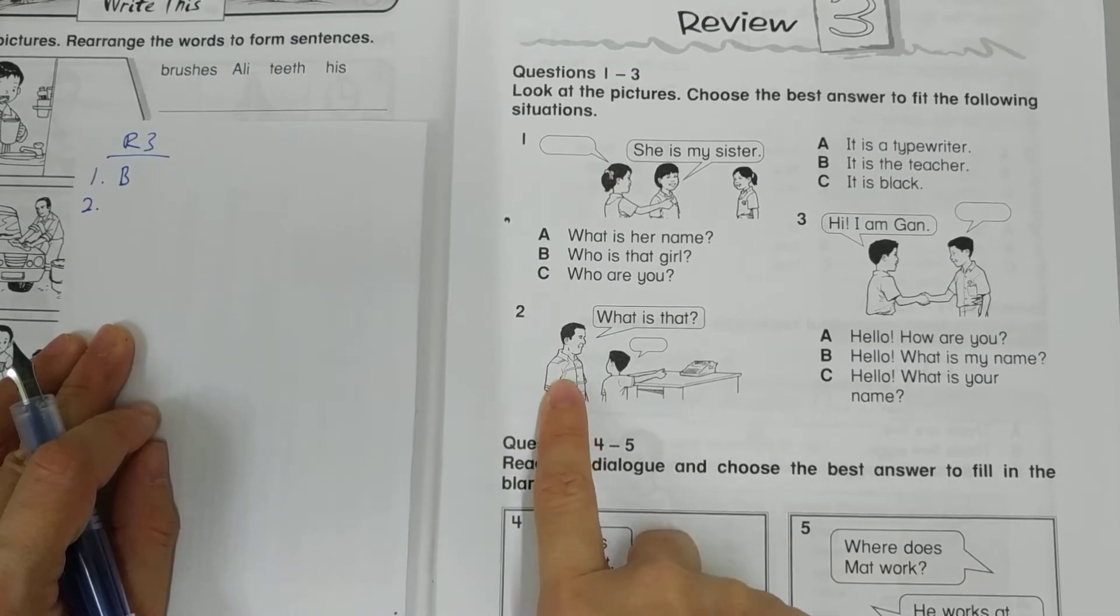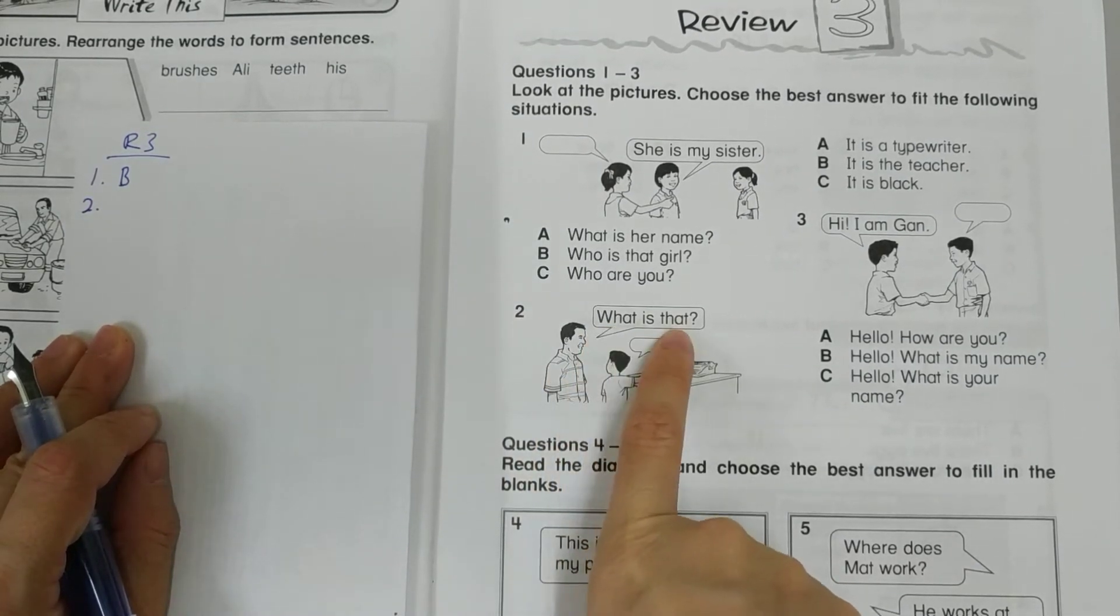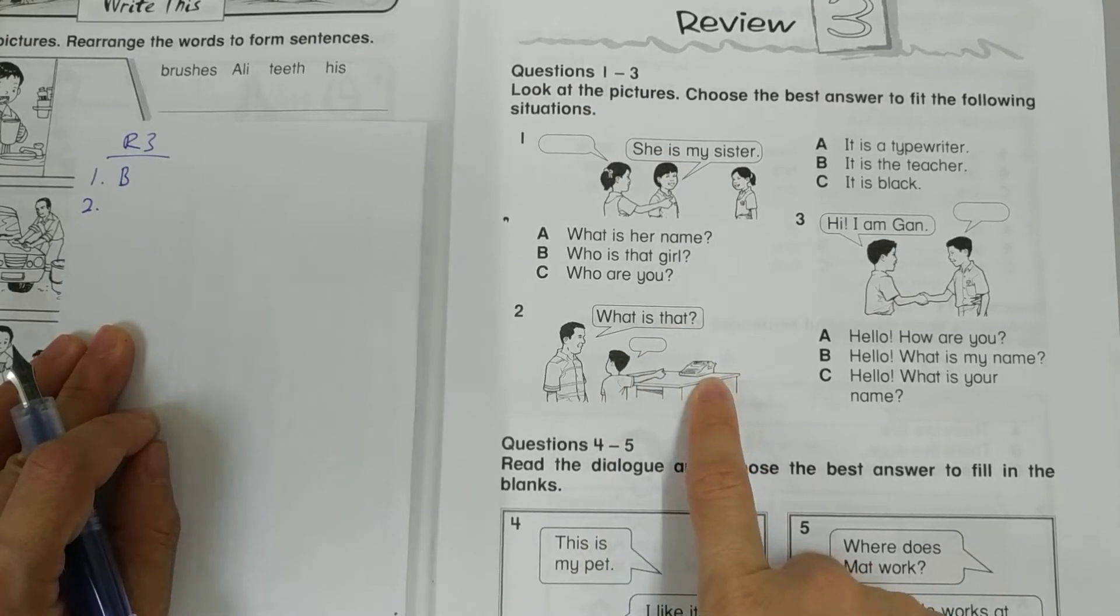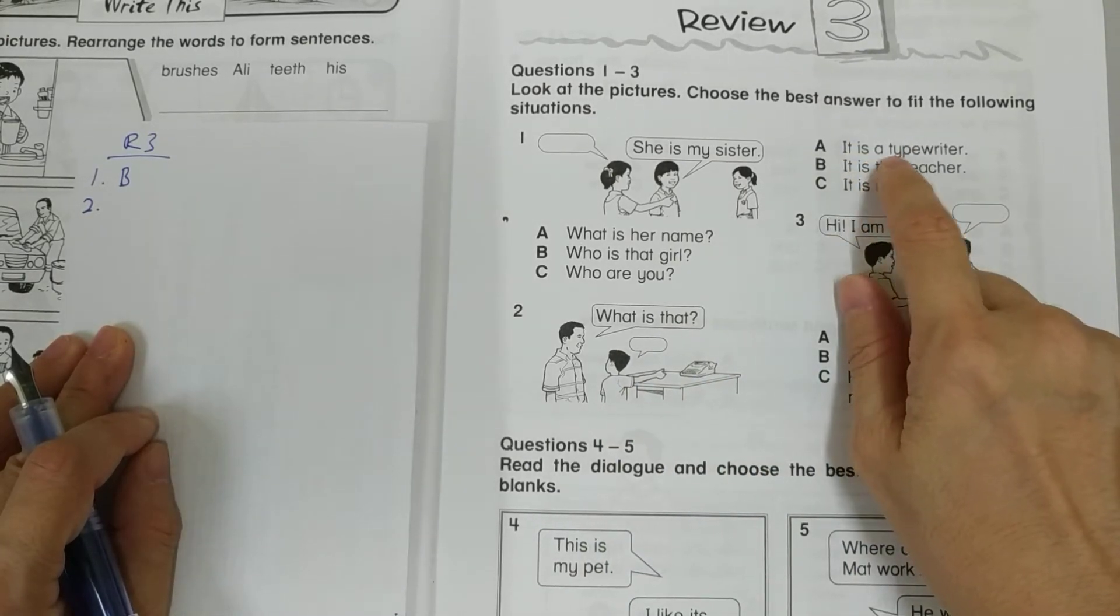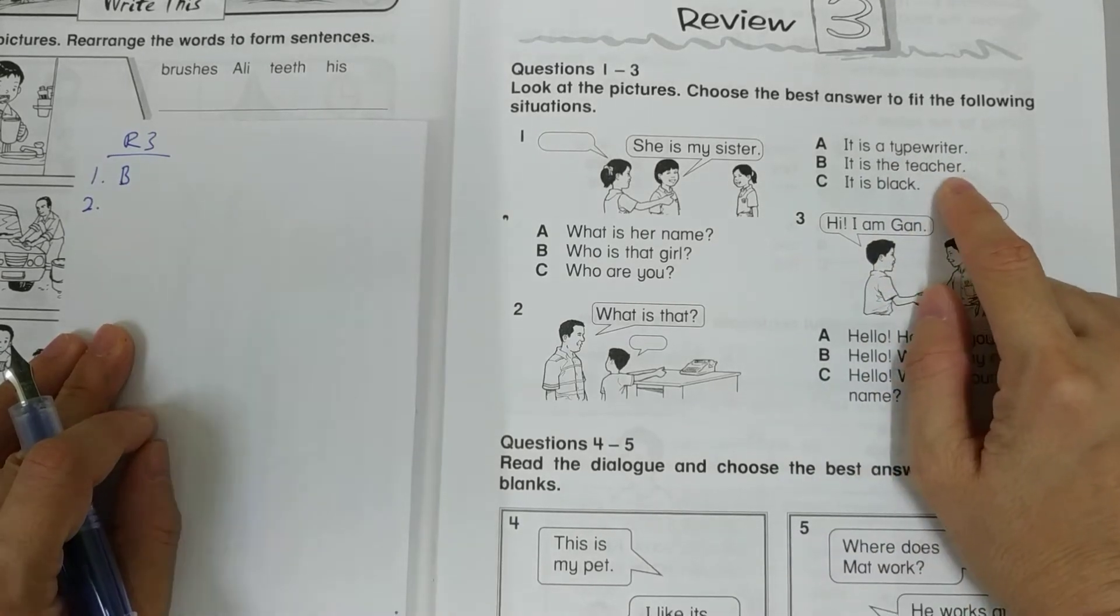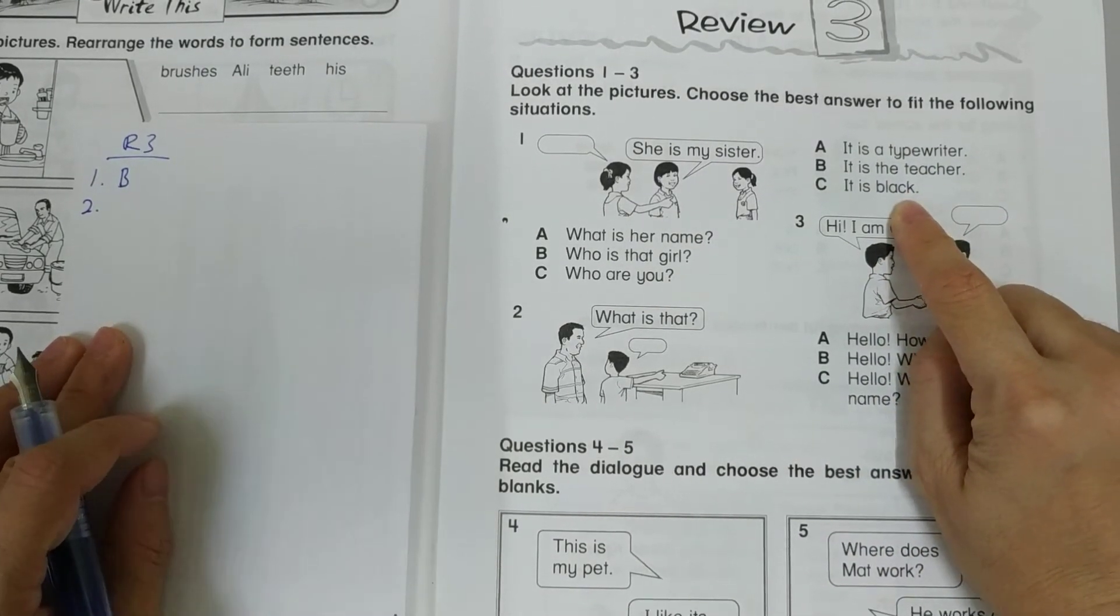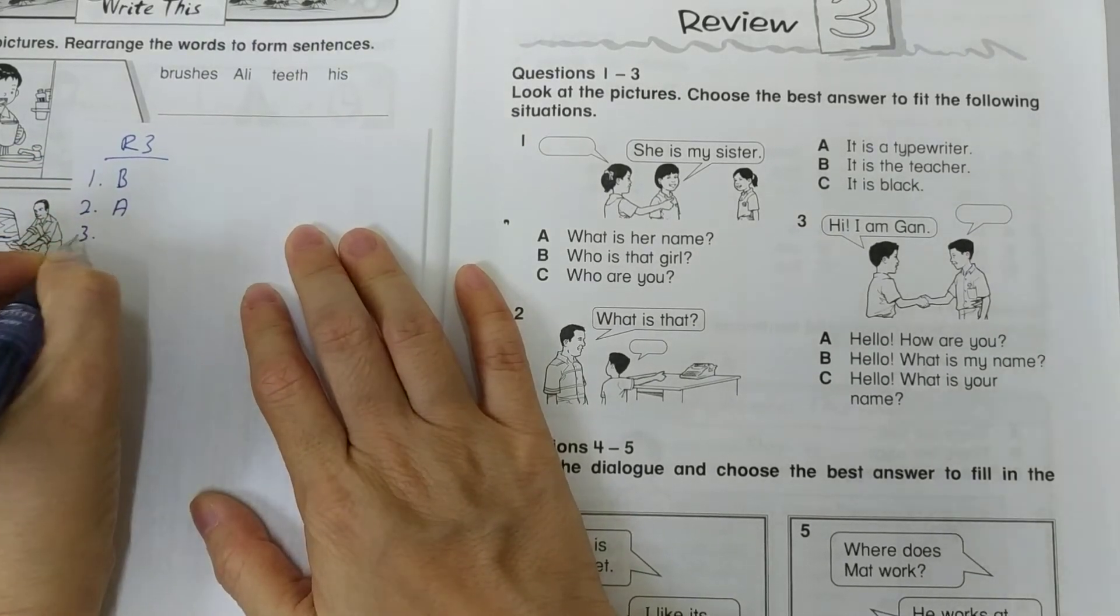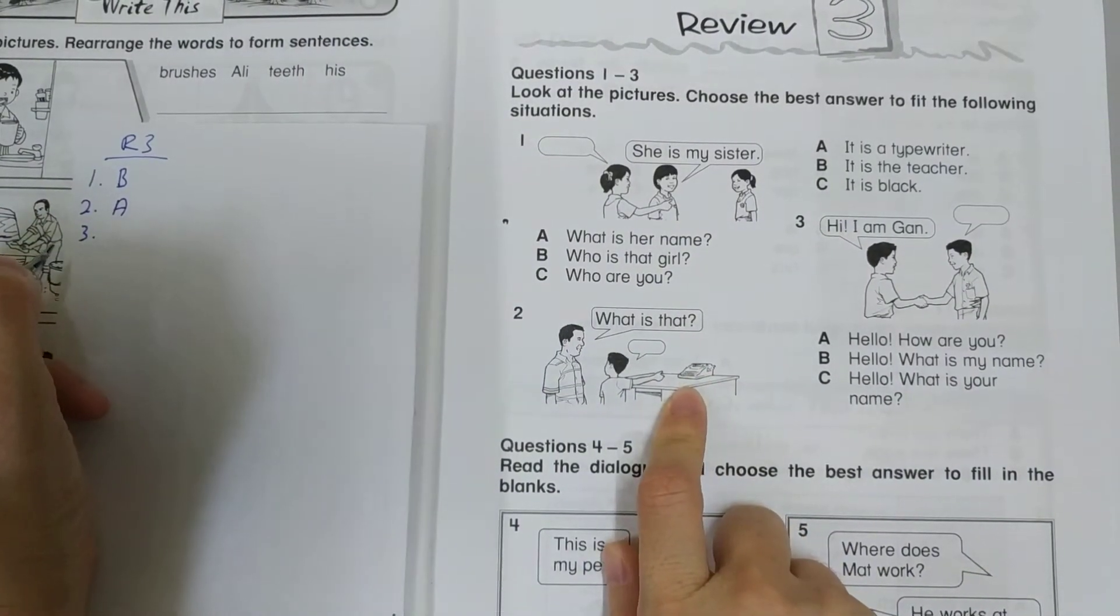Then number 2. The man is asking, what is that? And he answered, that's a typewriter. So it is a typewriter. Definitely not a teacher, definitely not black. It's not even colored black, so don't be cheeky.